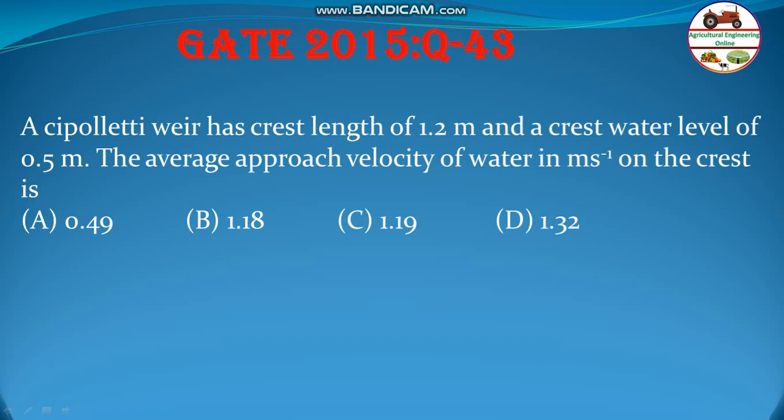Hello students, welcome to my channel Aggregation Online. Let us solve a problem. GATE 2015 question number 43. It says a cipolletti weir has crest length of 1.2 meter and a crest water level of 0.5 meter. The average approach velocity of water in meter per second on the crest is 0.49, 1.18, 1.19, or 1.32 meter per second.